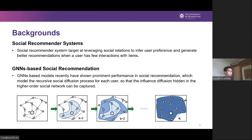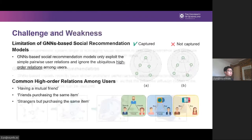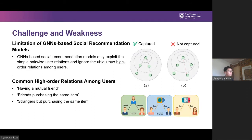Recently, graph neural networks have achieved great success in a wide range of areas. Owing to their powerful capability in modeling graph data, GNN-based methods have also shown prominent performance in social recommendation. Despite the benefits of GNNs, however, a key limitation of these GNN-based social recommendation models is that they only exploit simple pairwise user relations and ignore the ubiquitous users' high-order relations among users.